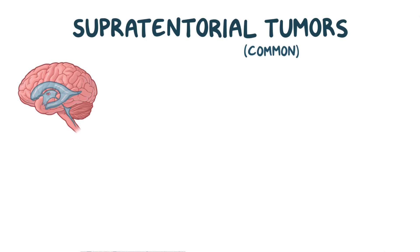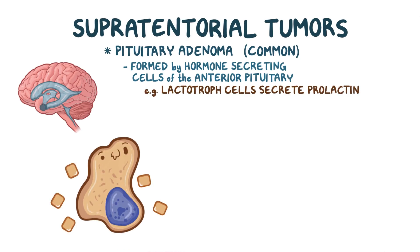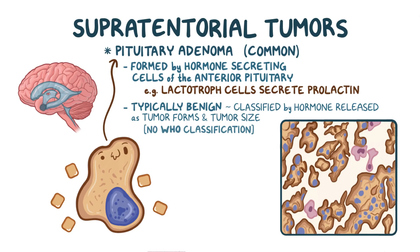Another common supratentorial tumor in adults is the pituitary adenoma, which is formed in the pituitary gland by hormone-secreting cells of the anterior pituitary. There are several cell types in the anterior pituitary that each secrete a tightly regulated level of a particular hormone — for example, lactotroph cells secrete the hormone prolactin. Pituitary adenomas are typically benign, so they're classified by the hormone that's released and by the size of the tumor, rather than using the standard WHO classifications. Histologically, the particular hormone-secreting cell causing the pituitary adenoma will increase in number.